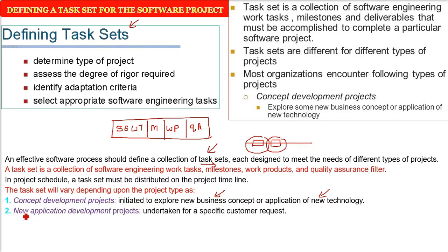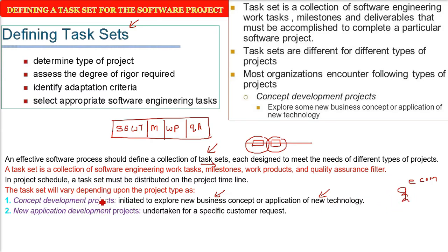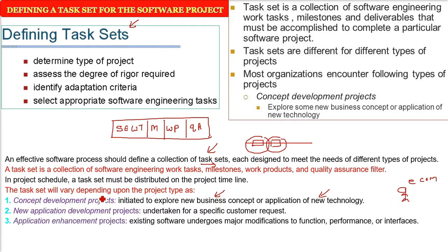The second type is new application development projects. This occurs when a customer comes with a specific request — for example, requesting an e-commerce website. That is a new application development project driven by a specific customer request.